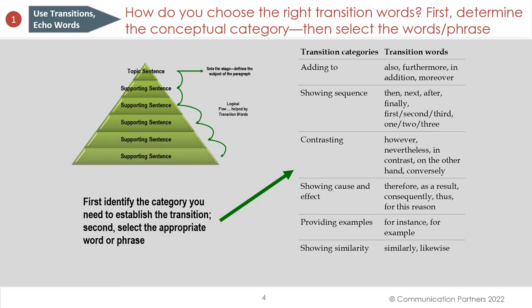How do you choose the right transition words? First, determine the conceptual category that connects sentences, then select the proper words and phrases. The transition categories are: adding to, showing sequence, contrasting, showing cause and effect, providing examples, and showing similarity — along with all the transition words associated with those categories. They serve an important purpose to link sentences together and create flow.